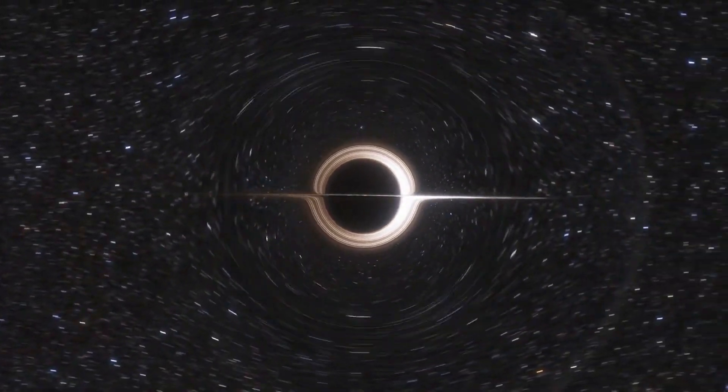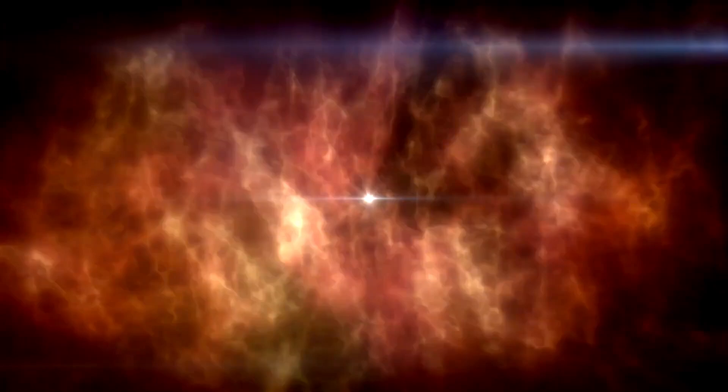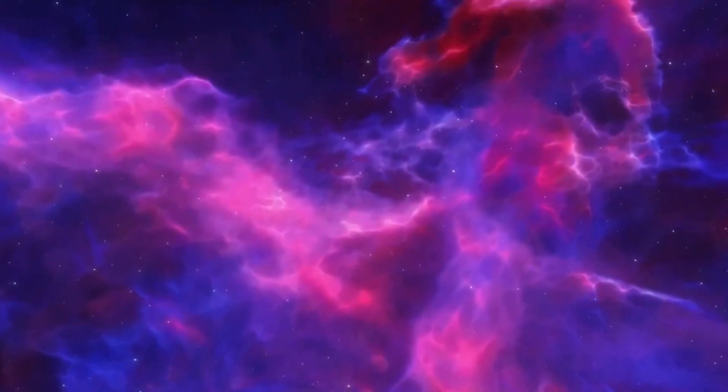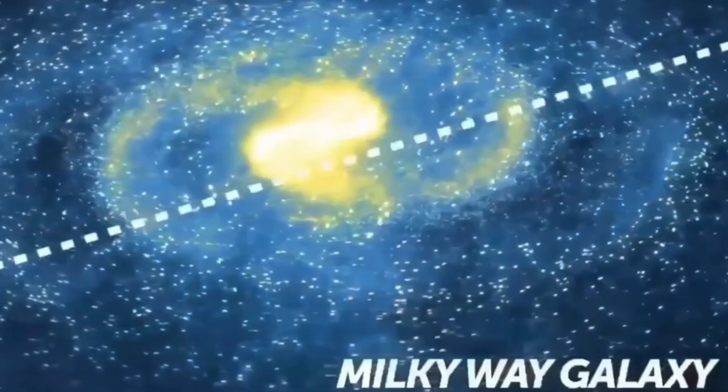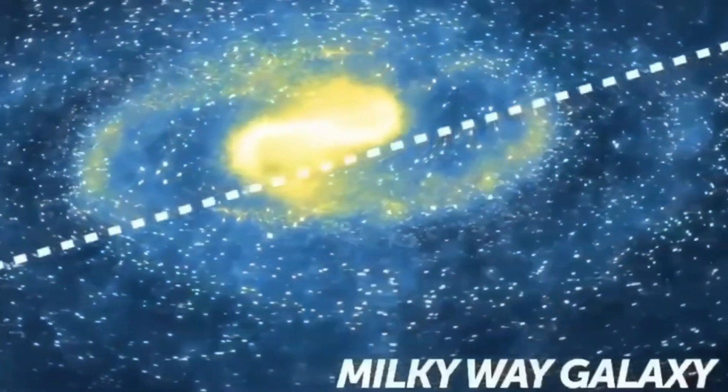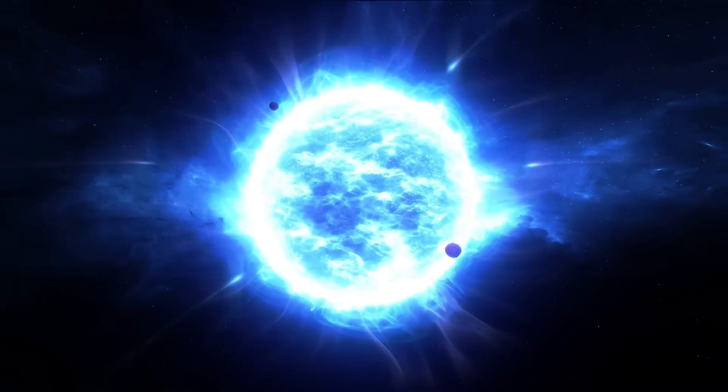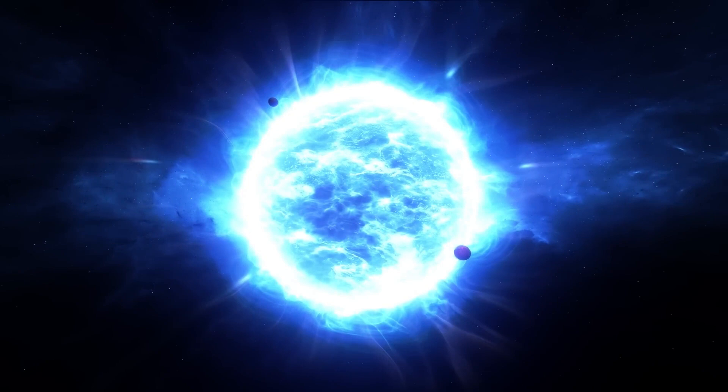Black holes are intricate space phenomena. Everything about them is complicated. When a large star, about 10 to 20 times more massive than the sun, exhausts all of its fuel, the balance between gravity and pressure breaks down, and the star collapses in on itself and goes supernova.